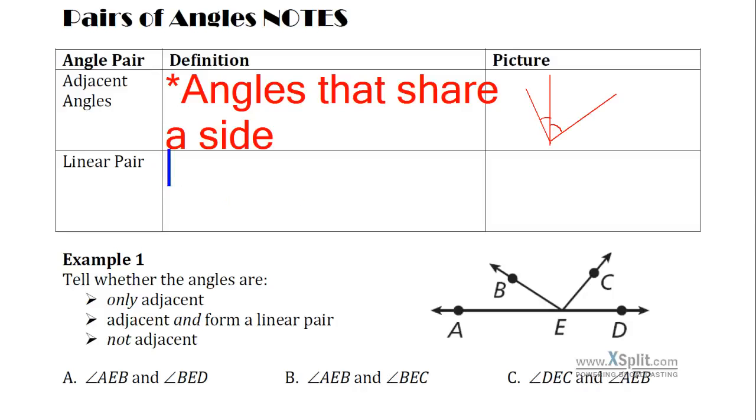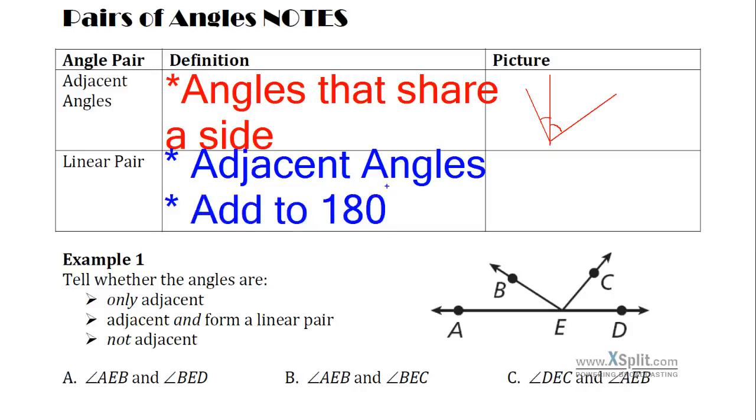A linear pair is going to be, they need to be adjacent angles, and specifically they need to add to 180 degrees. So this is going to look like a single angle, and then the next angle is going to come down and form a straight line with the first angle. So these two would then add to 180 degrees together.